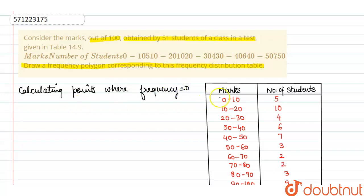Now difference is 10 minus 0 means this difference of 10. So first point can be written as 0 plus 10 upon 2 minus 10. It means 5 minus 10, it means minus 5.